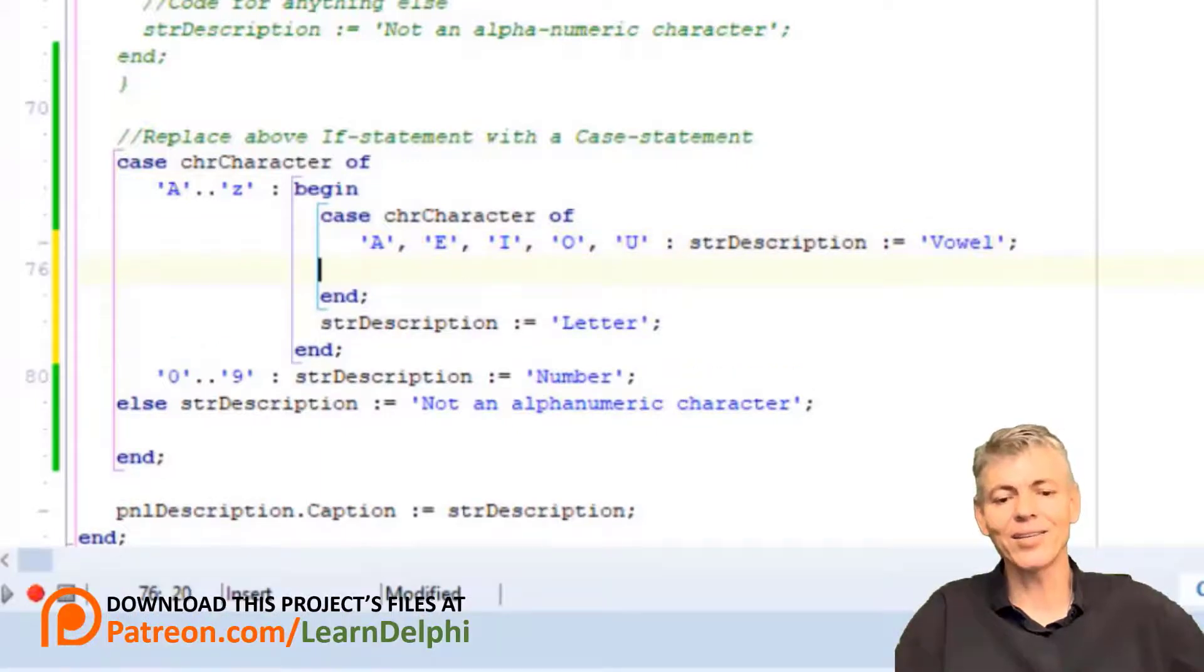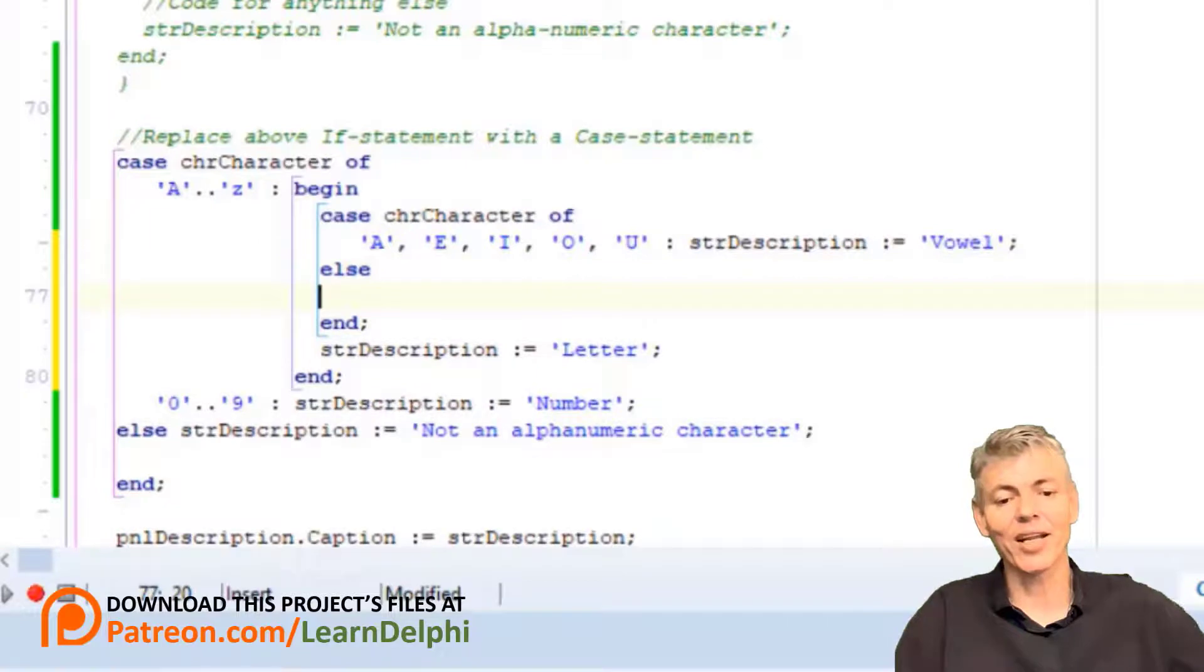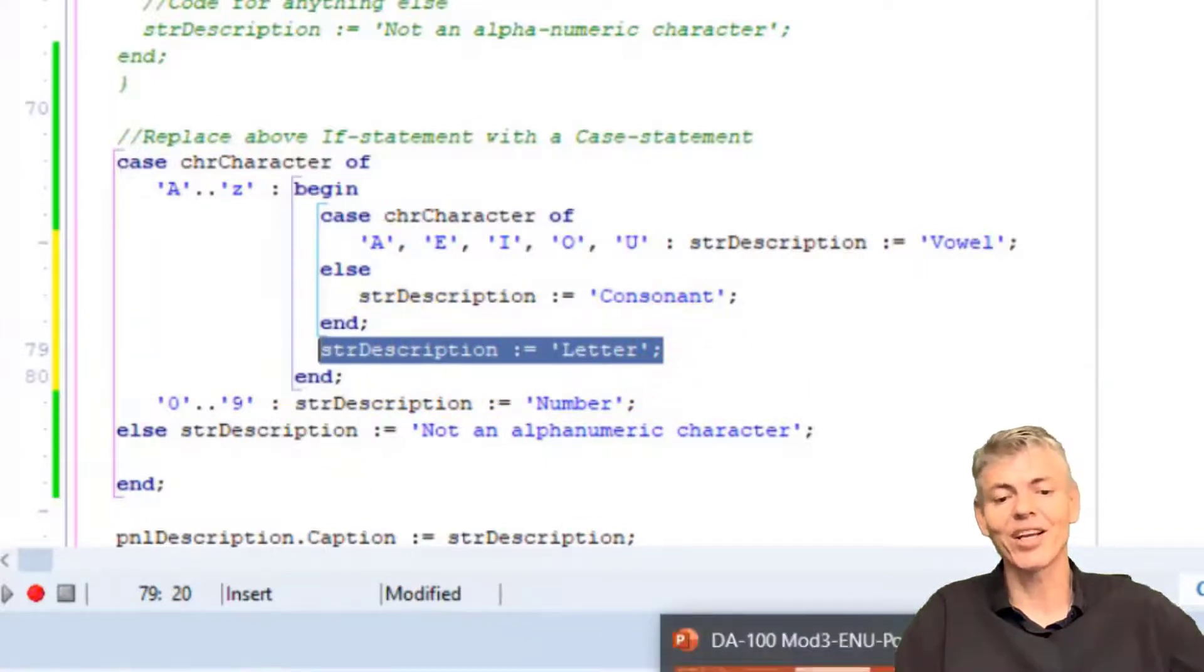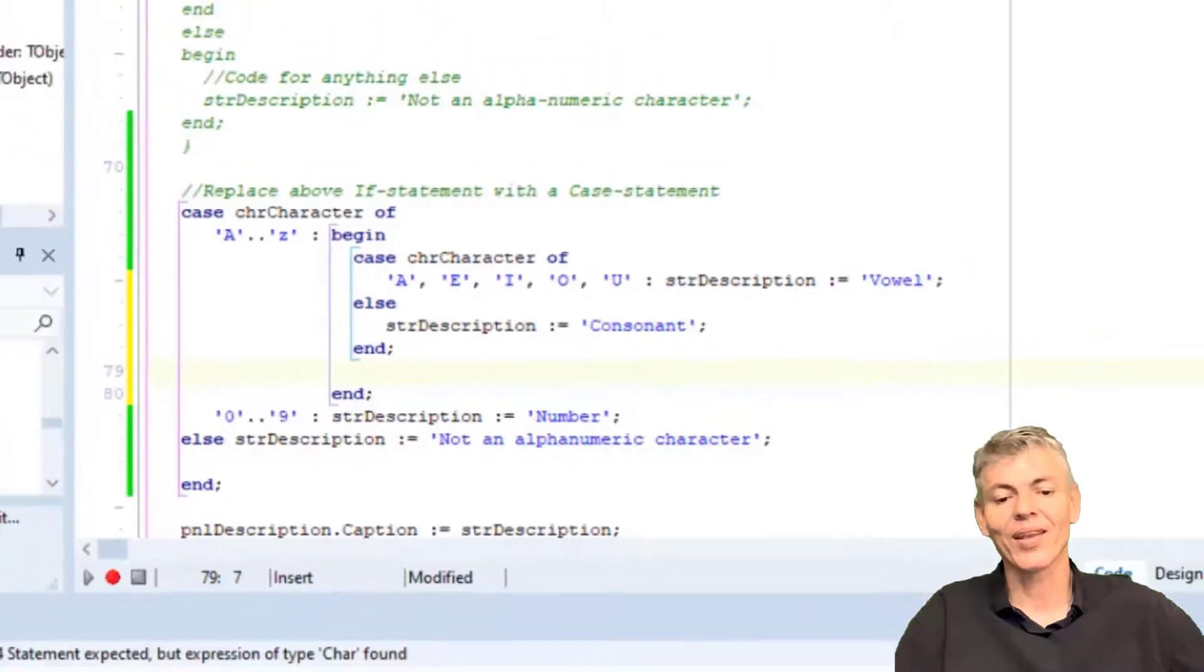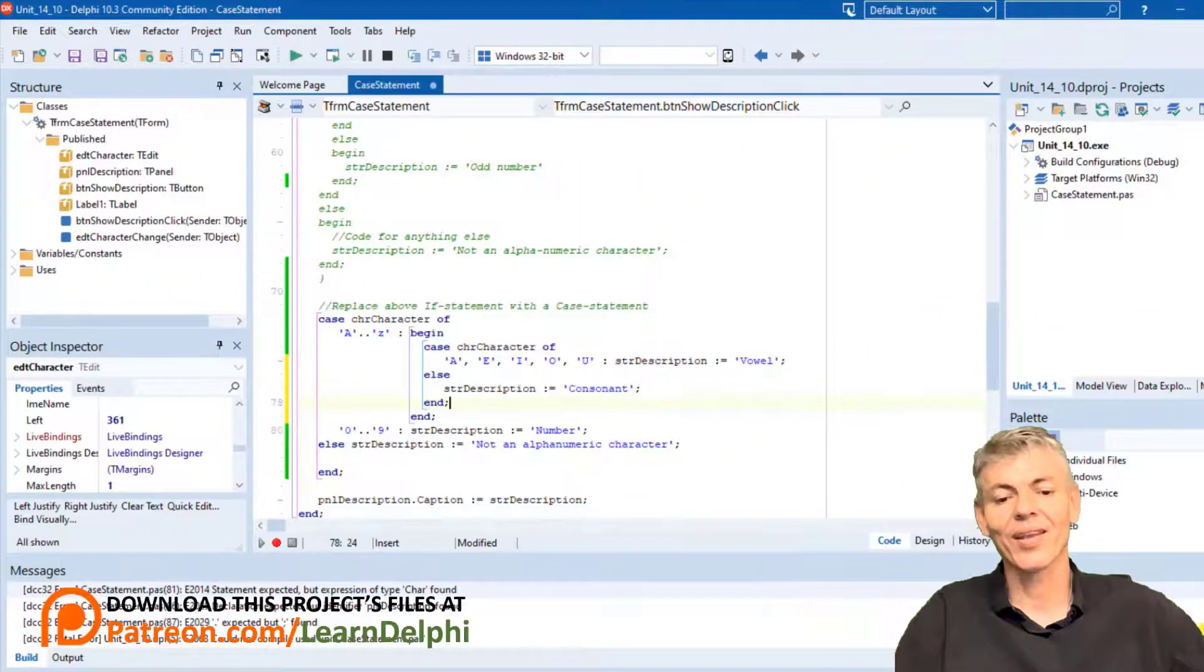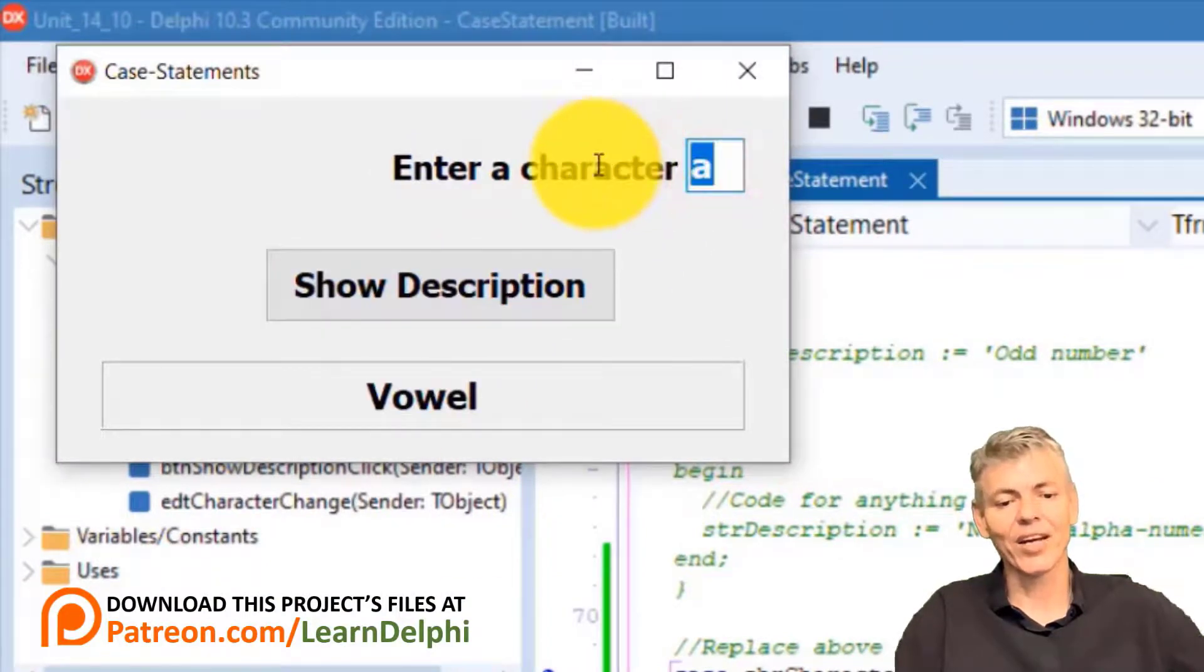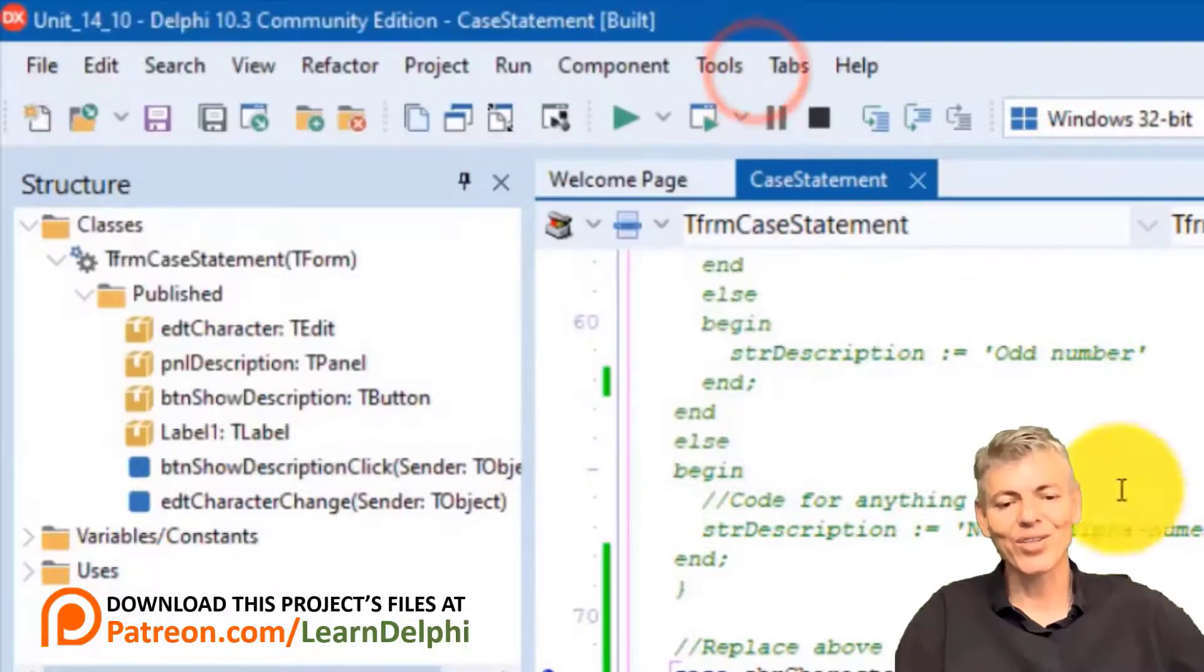If it is a vowel, we assign the word vowel to strDescription. Again, notice the end without the begin. Go to the next line. Type else. Go under the else statement and type strDescription := consonant. So, if the character is not a vowel, the else statement must assign the word consonant to strDescription. You can remove this statement, because we do not need it anymore. Run the project. Type a vowel and then a consonant and make sure you get the correct results. Close the form.